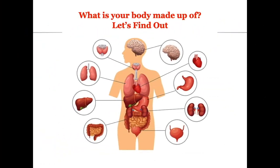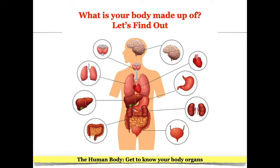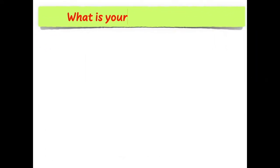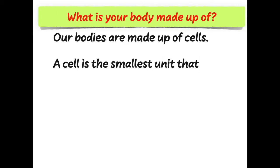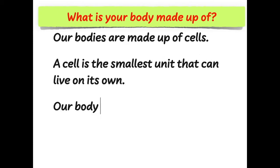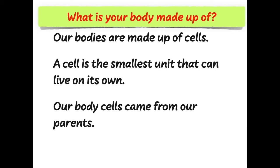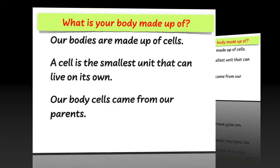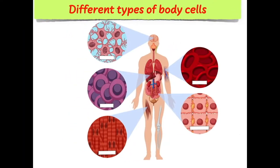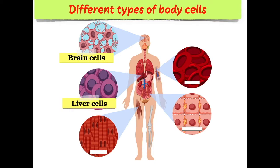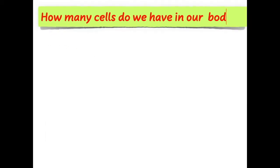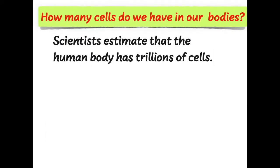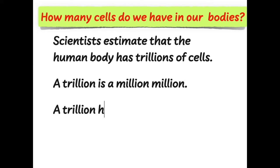What is your body made up of? Let us find out. Our bodies are made up of cells. A cell is the smallest unit that can live on its own. Our body cells came from our parents. Our bodies have different types of body cells — examples are brain cells, liver cells, muscle cells, blood cells, and intestinal cells. Scientists estimate that a human body has trillions of cells. A trillion is a million million — a trillion has twelve zeros.